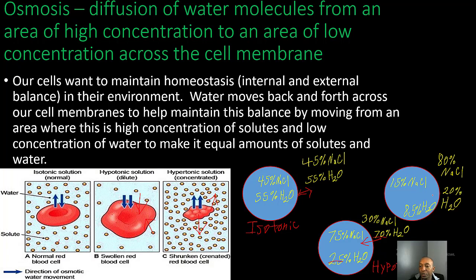In our third example, we have 20% water outside the cell and 85% water inside, with a large amount of solutes outside. The water from inside the cell rushes out to try to balance those solutes and establish equilibrium. When that water rushes outside, it causes the cell to shrink — that represents our hypertonic solution.